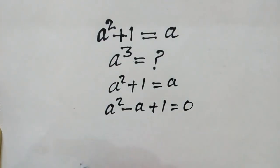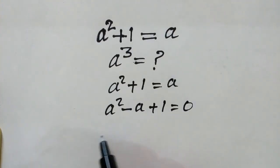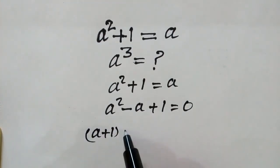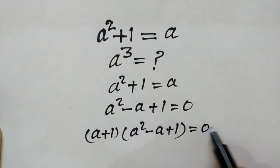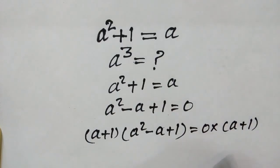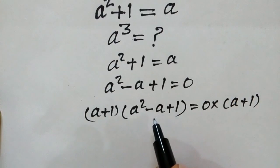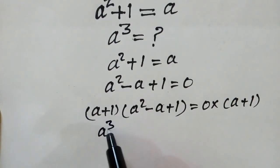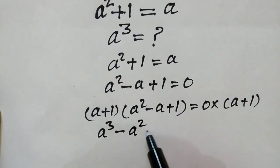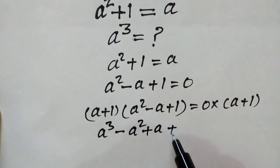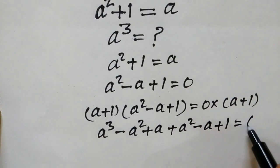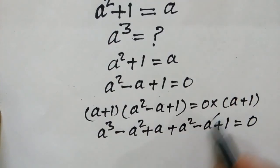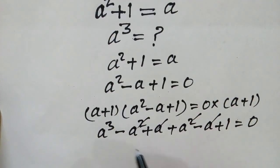If we multiply both sides by (a plus 1): (a squared minus a plus 1)(a plus 1) equals 0. After multiplication we get a cube minus a squared plus a plus a squared minus a plus 1 equals 0. The a squared and a terms cancel out, leaving a cube plus 1 equals 0.